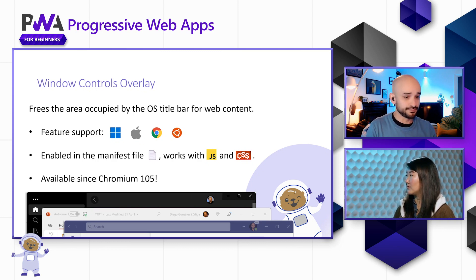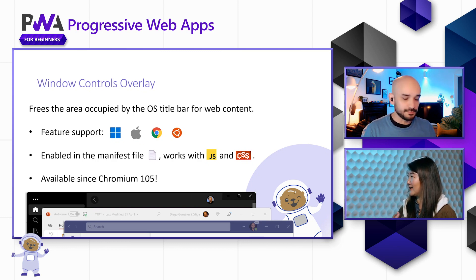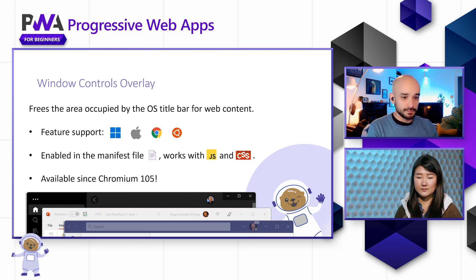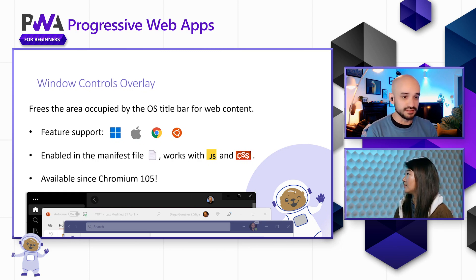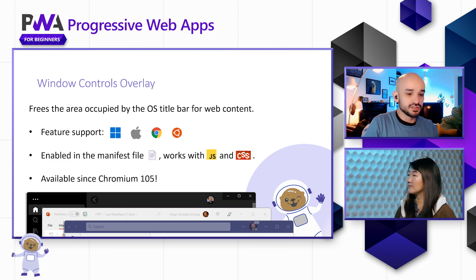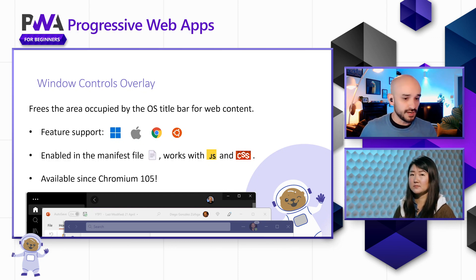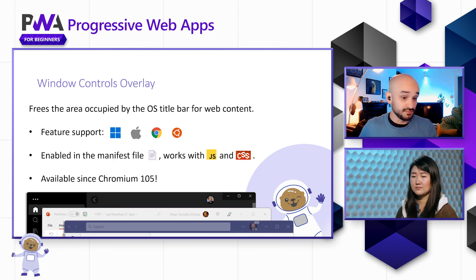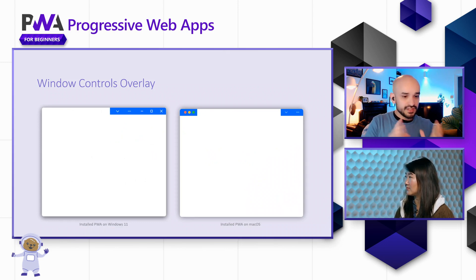Without this, the title bar would just be empty space with different colors, looking not integrated at all. Window controls overlay is supported on Windows, Mac, Chrome OS, and Linux. It's enabled in the manifest file, and you have either a JavaScript API for programmatic control or a CSS API. It's available since Chromium 105, and there's even a media query that lets you dynamically change the layout depending on whether the feature is activated or deactivated.